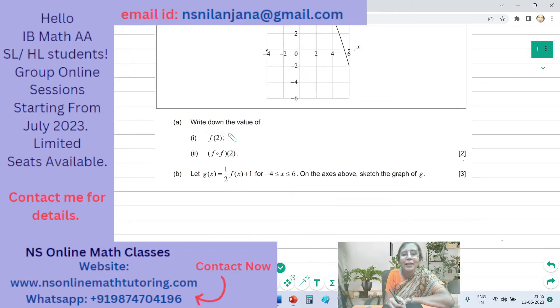Subpart A says write down the following: write down the value of (i) F of 2, and (ii) F of F of 2.